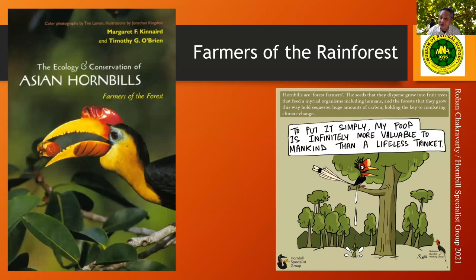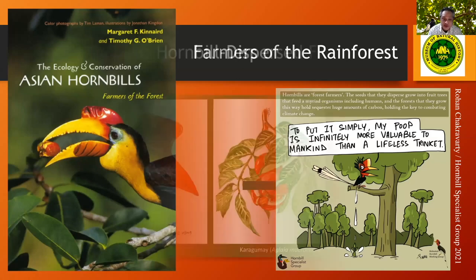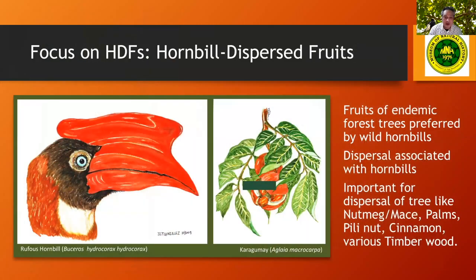We recognize hornbills because of their co-evolutionary relationship with a lot of rainforest trees — that's why they're called forest farmers. They help disperse seeds, especially large-seeded fruit, which are difficult for other animals to disperse. For example, buto ng pili — ang kalaki-laki niya. You need a big bird to disperse it. So hornbills can disperse these large-seeded trees. I did a study looking into the fruits of endemic forest trees preferred by wild hornbills, often associated with hornbills themselves, which we call hornbill-dispersed fruits.